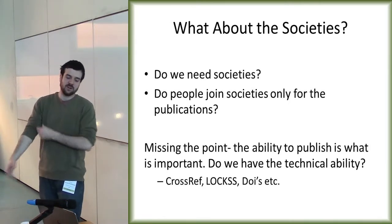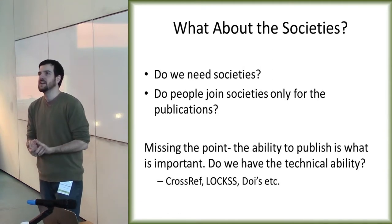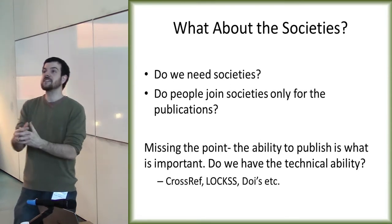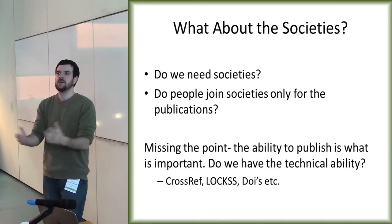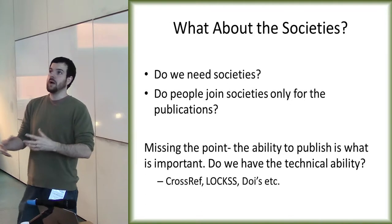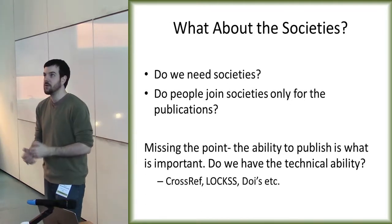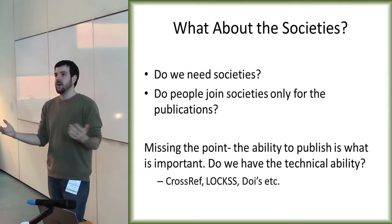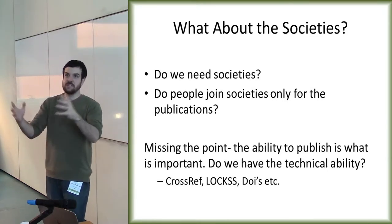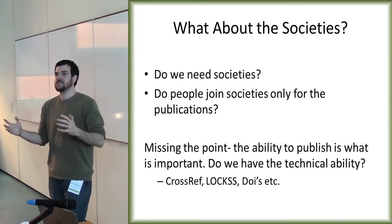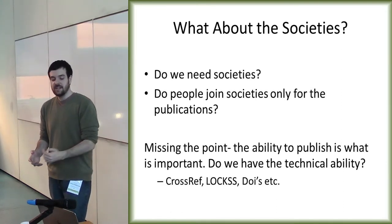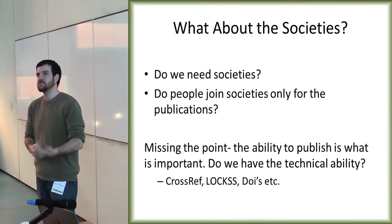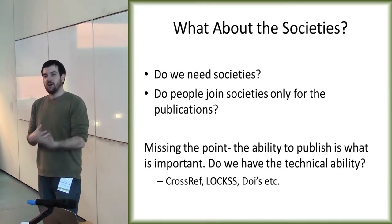If societies do want to publish, it's a bit more difficult than simply putting a PDF on a website. Open access is incredibly easy to do — it's a PDF on a website with a license saying anyone can reuse it. But open access done well is complicated. You have to have DOIs so people can find your articles if your website breaks down or your journal shuts down. You need LOCKSS. What happens if your society stops publishing? Where does all that digital content go? Who preserves it? These are very complicated issues, and I don't want to downplay what publishers do — they do an incredible amount of technical work.